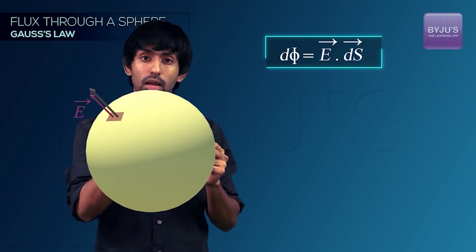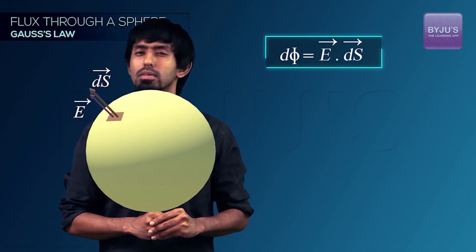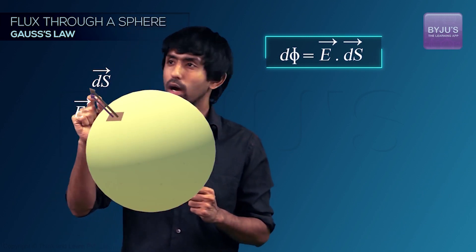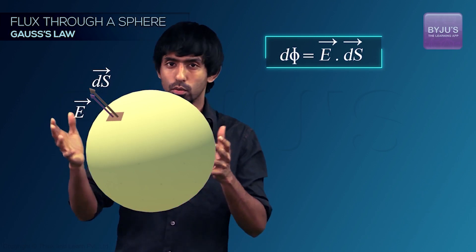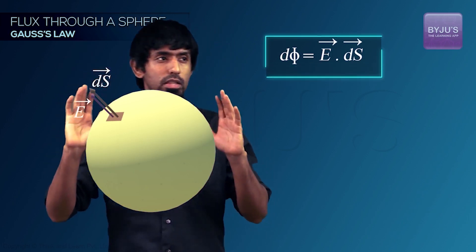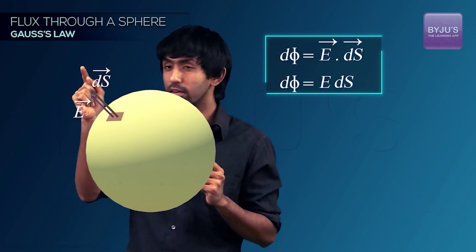Because the angle between E and the area vector is going to be zero degrees, because the area vector is going to point along the radius. That's how a sphere works. And your electric field, because of the fact that the charge is there, is going to point right radial that way. So you can forget the dot over there. It's just the product of the magnitudes at every single point.